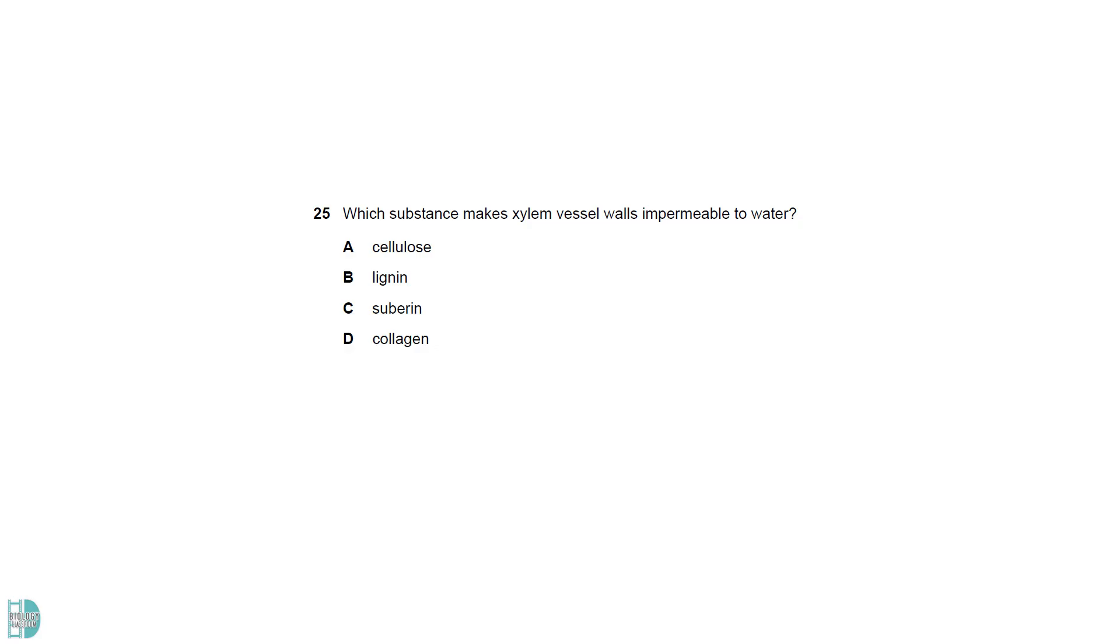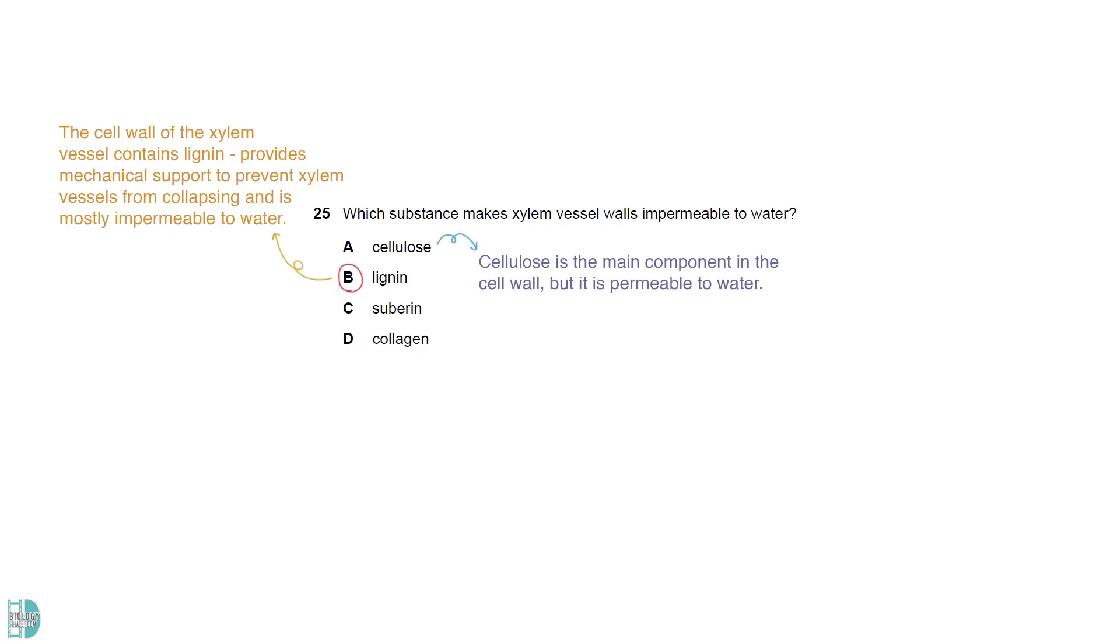The cell wall of xylem vessel contains lignin. It provides mechanical support to prevent xylem vessels from collapsing, and is mostly impermeable to water. Cellulose is the main component in the cell wall, but it is permeable to water. While suberin is impermeable to water, it is a key component of the endodermis, particularly in the Casparian strip. It is not a typical component of the xylem vessel walls. Plant cell walls do not contain collagen.